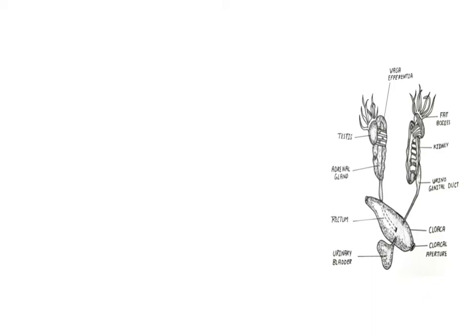We all know that frog is a unisexual animal, so like human beings, the male frog is separate and female frog is separate. Both individuals consist of a reproductive system to help in the process of reproduction. The male frog consists of a male reproductive system which produces male gametes, and the female frog consists of a female reproductive system in order to produce female gametes.